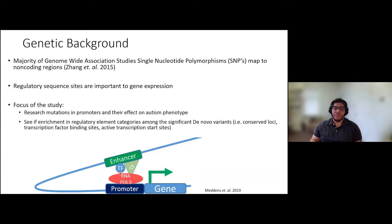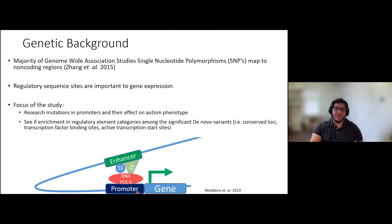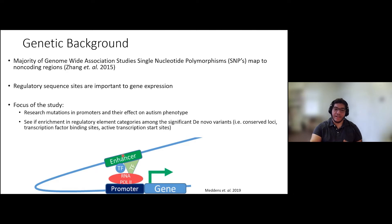We wanted to analyze these regions to see if mutations could affect the transcription complex and the amount of gene expression, and whether that could be associated with causing the autism phenotype. The focus of our study is two-pronged: first, we focus on promoters to see if mutations in them cause autism phenotype; and second, we examine whether significant variants are part of regulatory elements such as transcription factor binding sites or conserved loci sites.